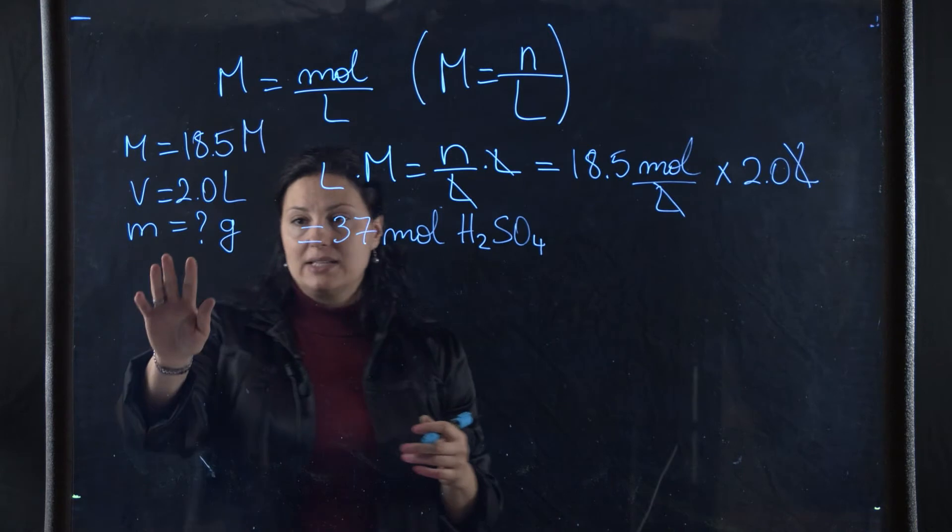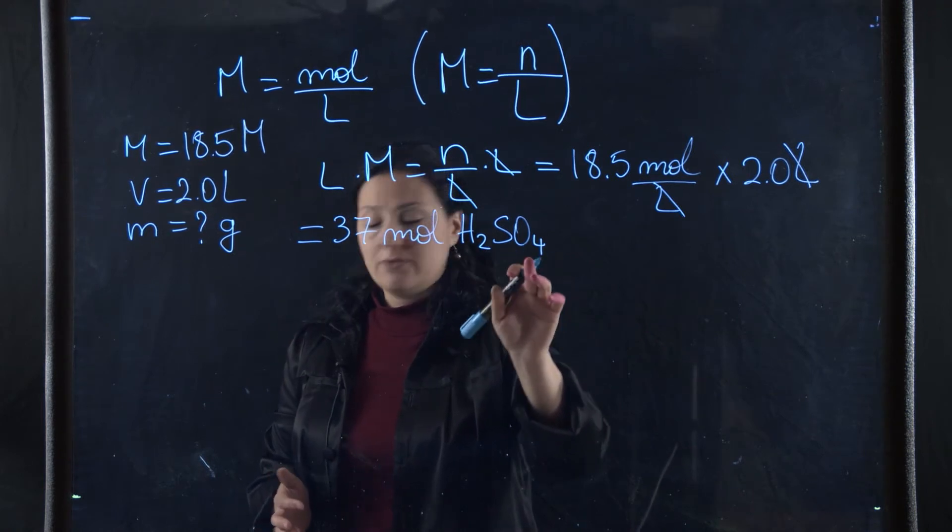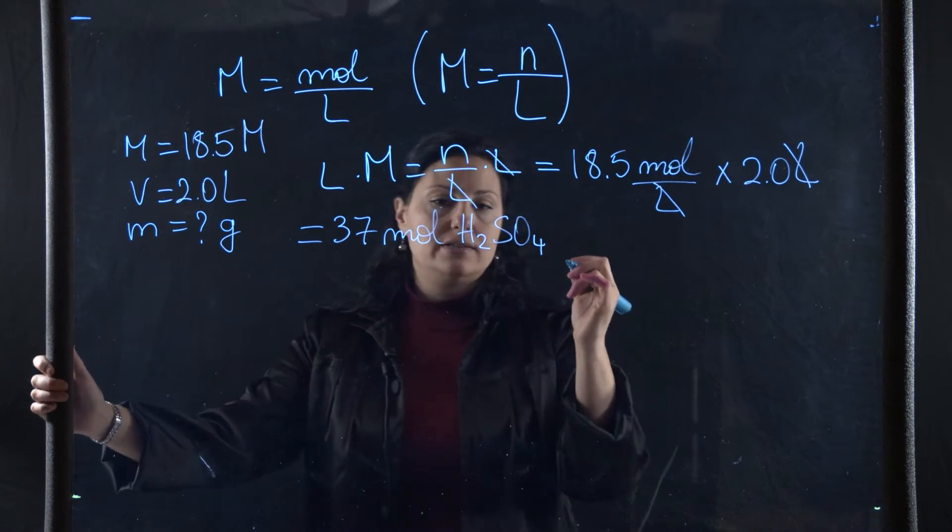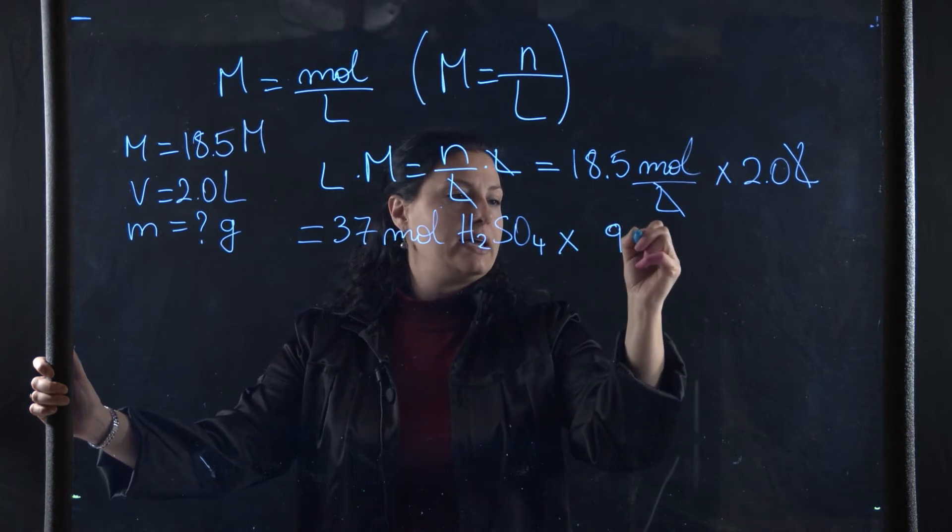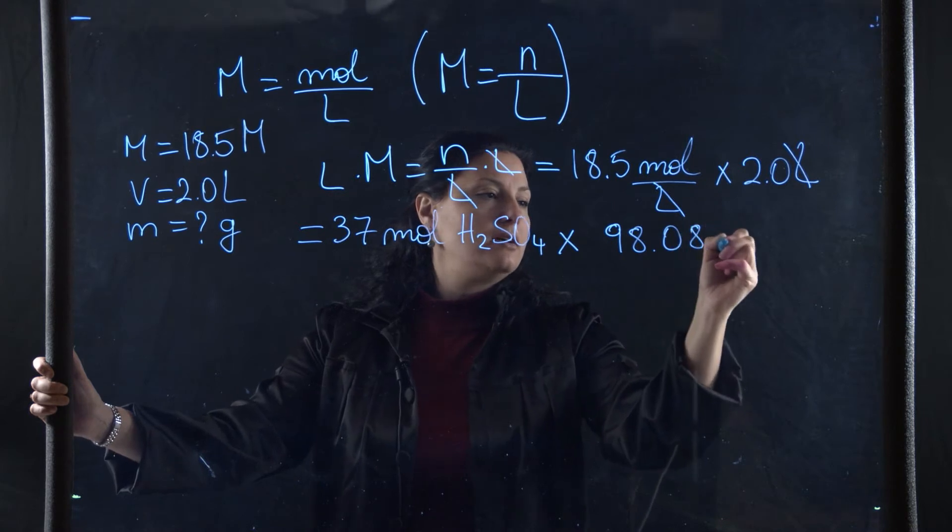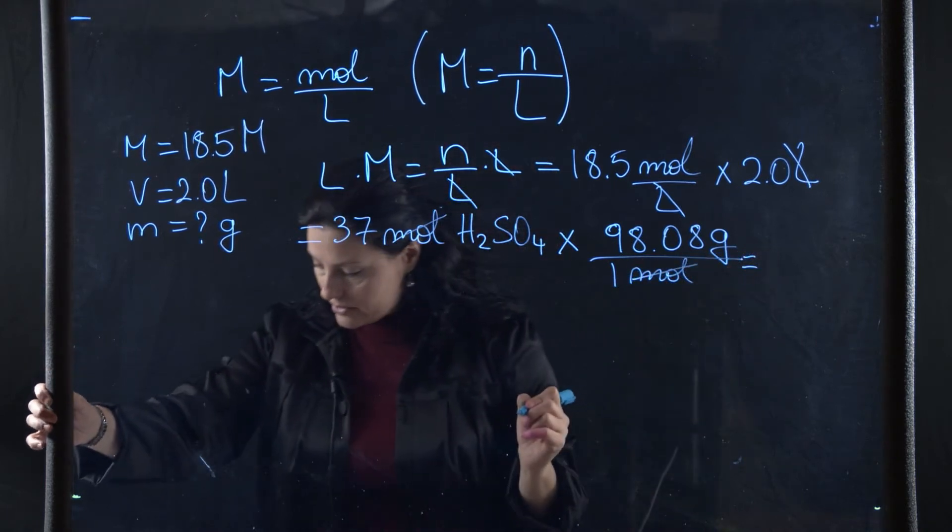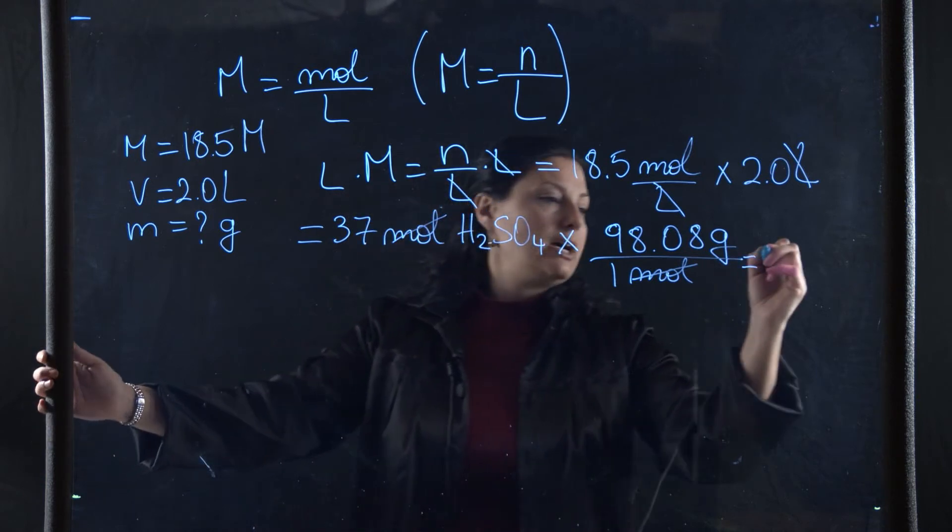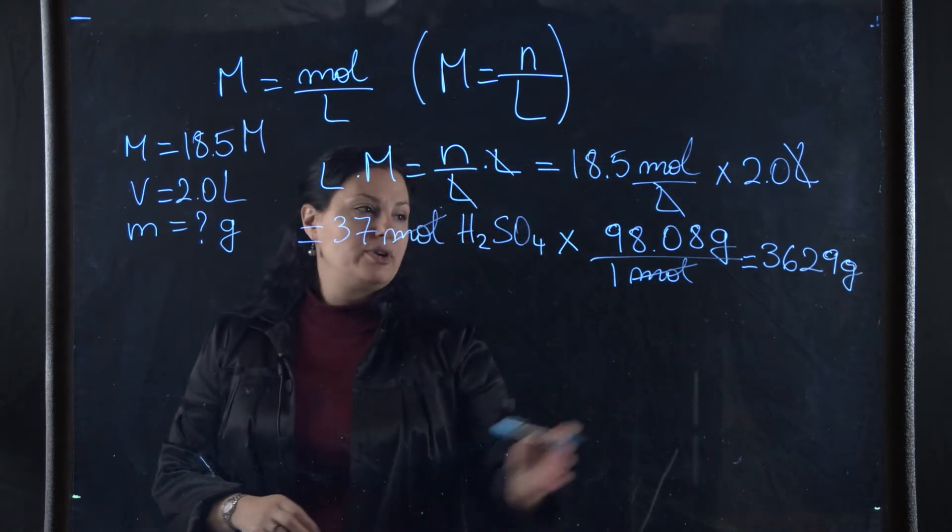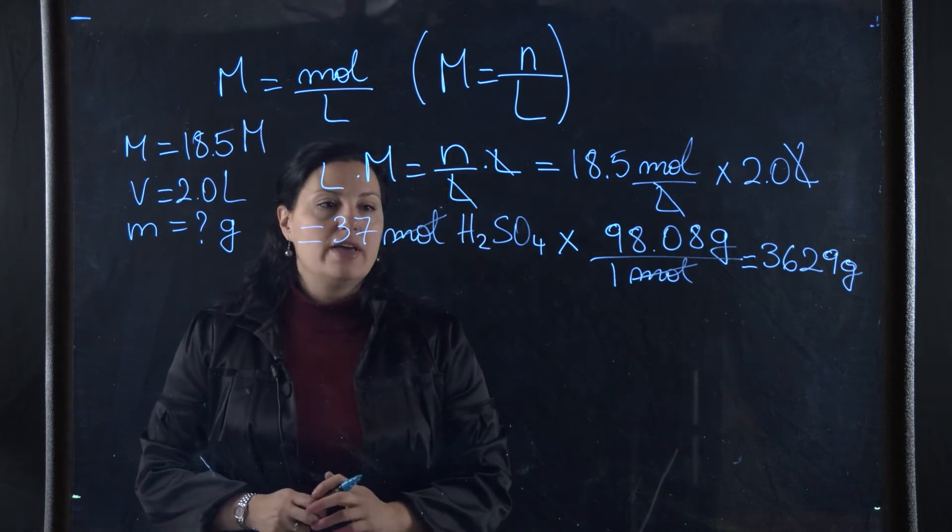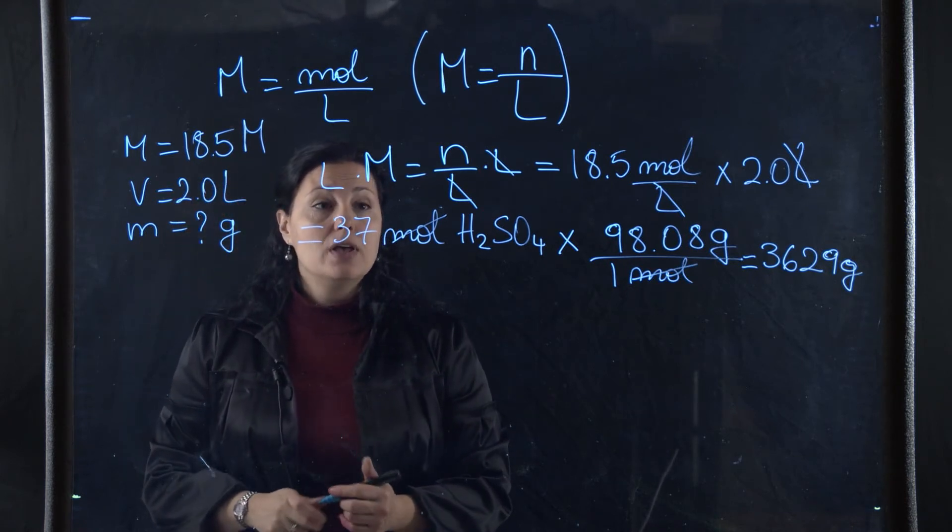To figure out the mass in grams, I need to once again use the molar mass of H2SO4. You can calculate the two hydrogens, one sulfur, four oxygens, and the molar mass is 98.08. I need to write that conversion factor so my moles will cancel: 98.08 grams per one mole of H2SO4. My moles will cancel and this gives me 3629 grams. This is over three and a half kilograms of H2SO4 solid to make 18.5 molar solution in two liters.